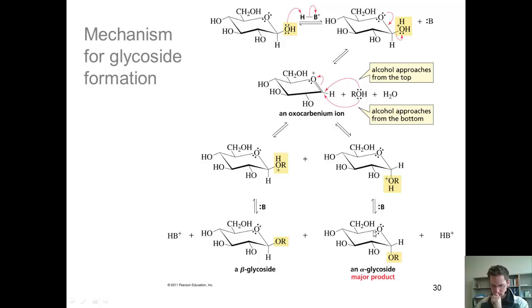Alpha-glycosides, strangely, are the major product, even though they have an axial OR group instead of an equatorial. I'm not going to tell you in too much depth as to why. It's caused by something called the anomeric effect. But it is interesting to note.